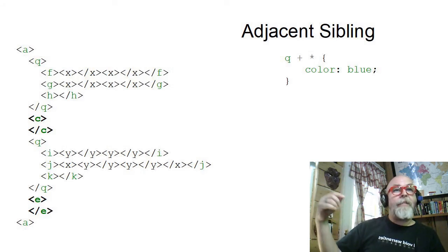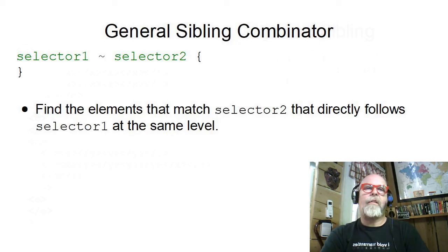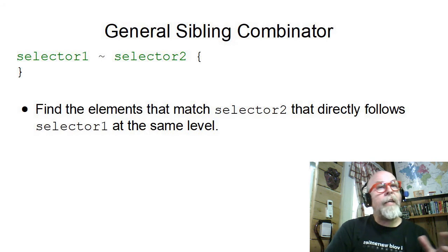You can see that it grabbed the C tag because it's the sibling that followed the Q. It also grabbed the E tag because it's the sibling that followed the Q. Notice it found siblings, not children. The adjacent sibling just got the next sibling.